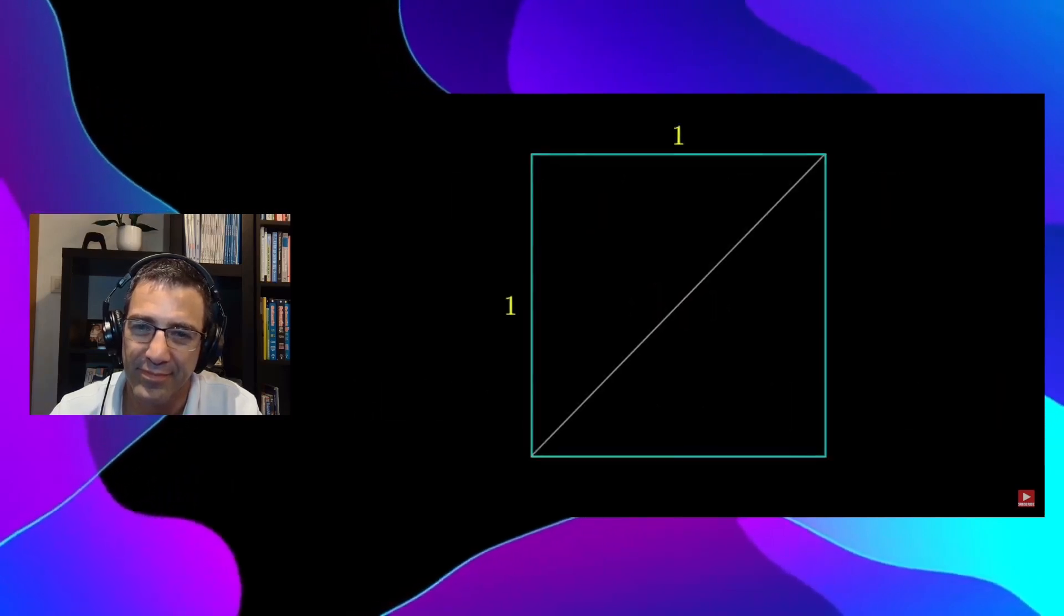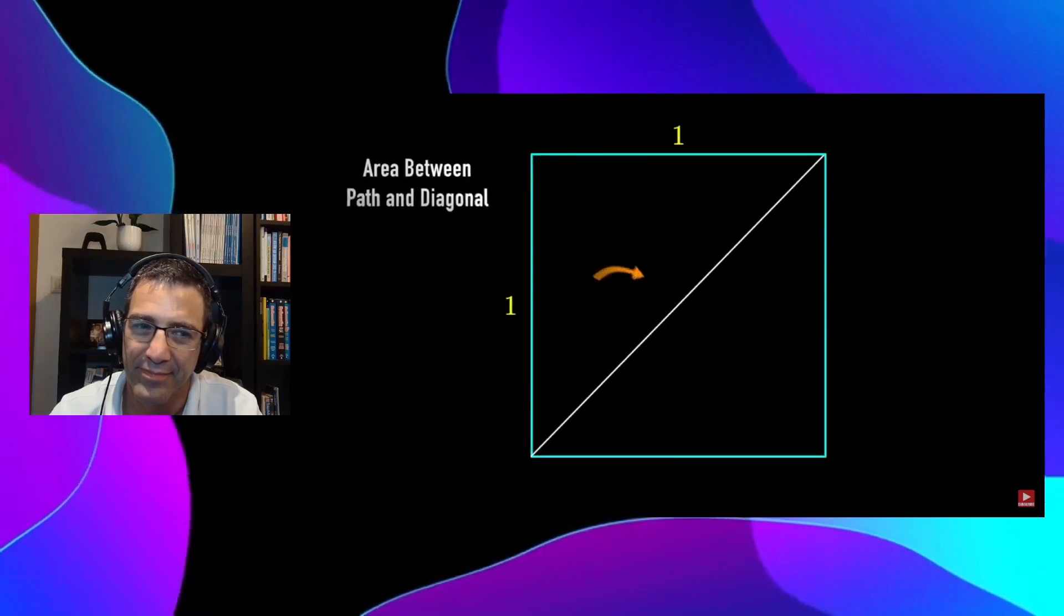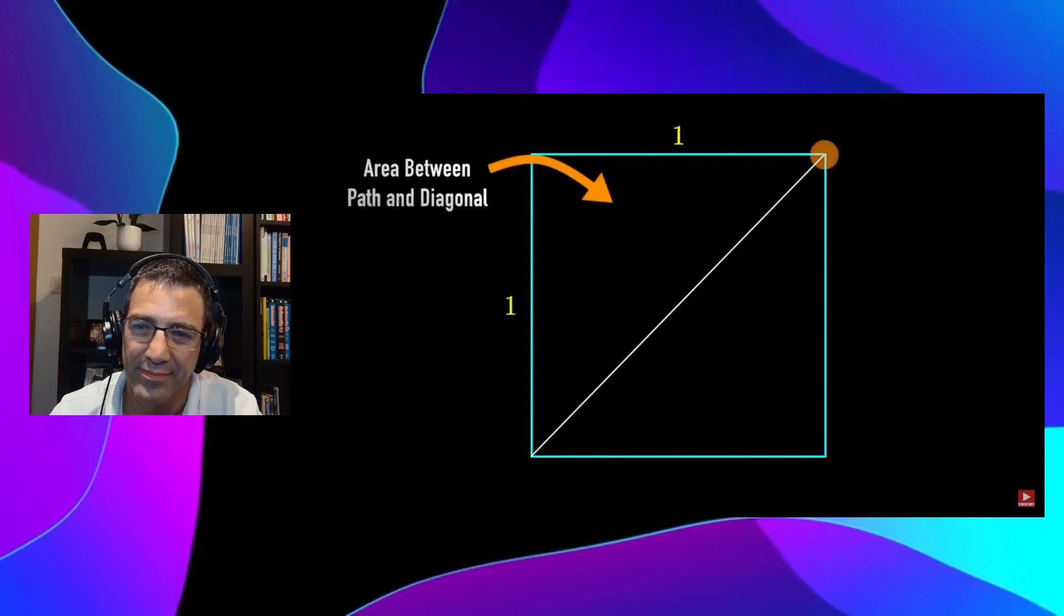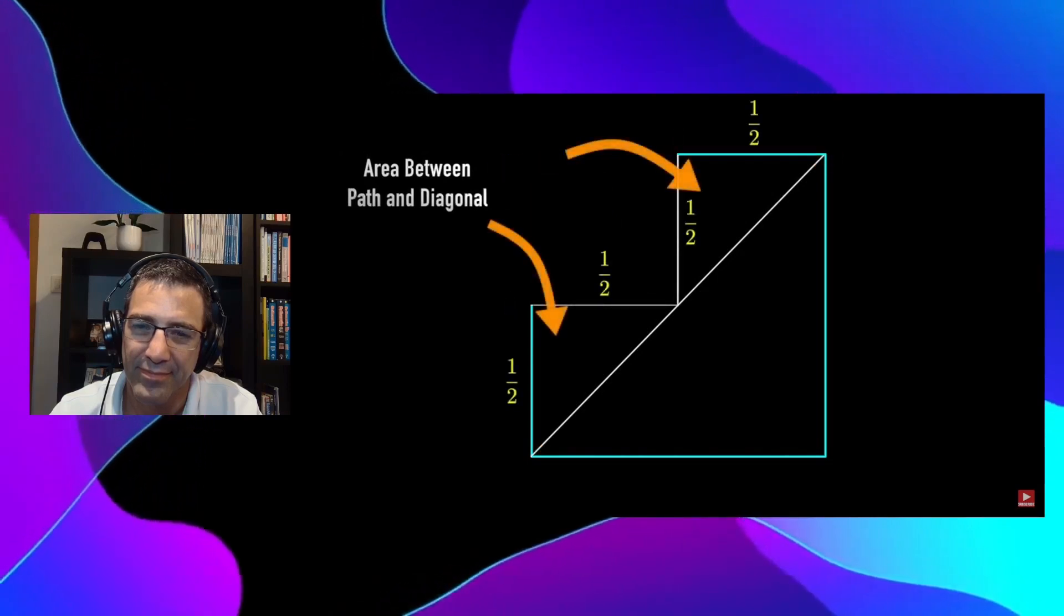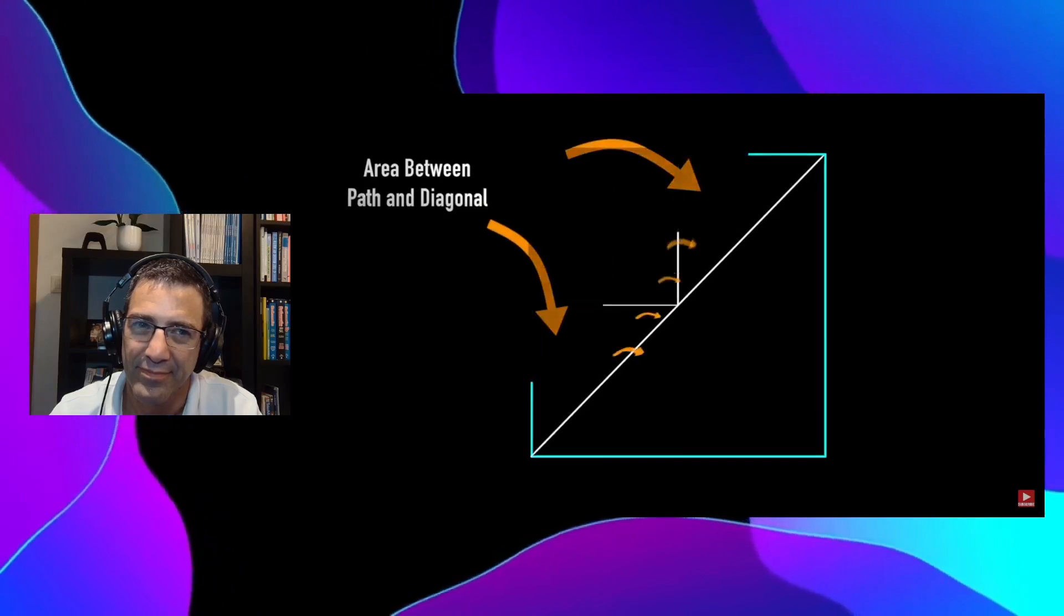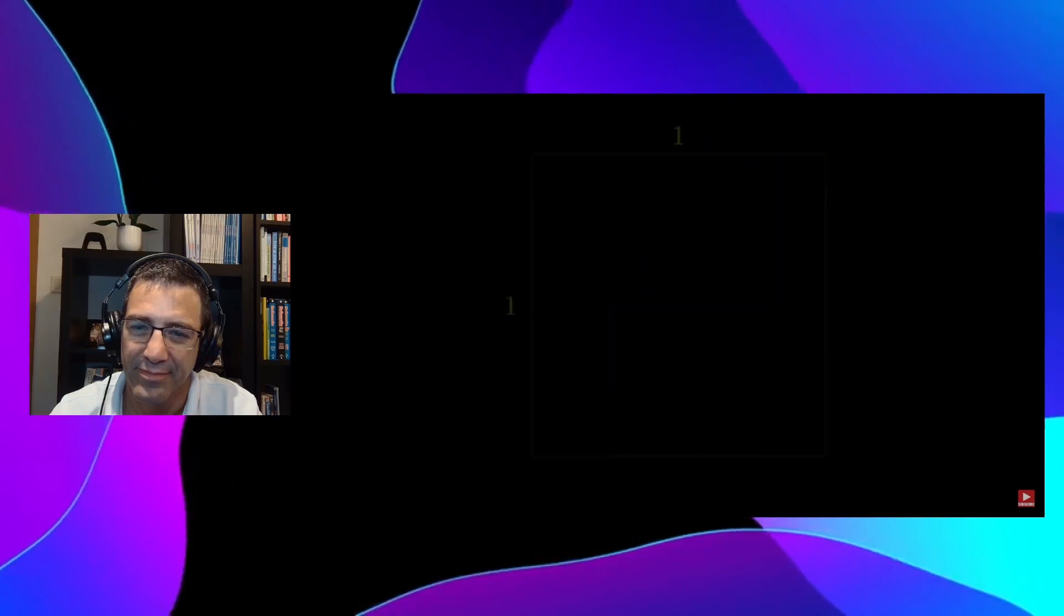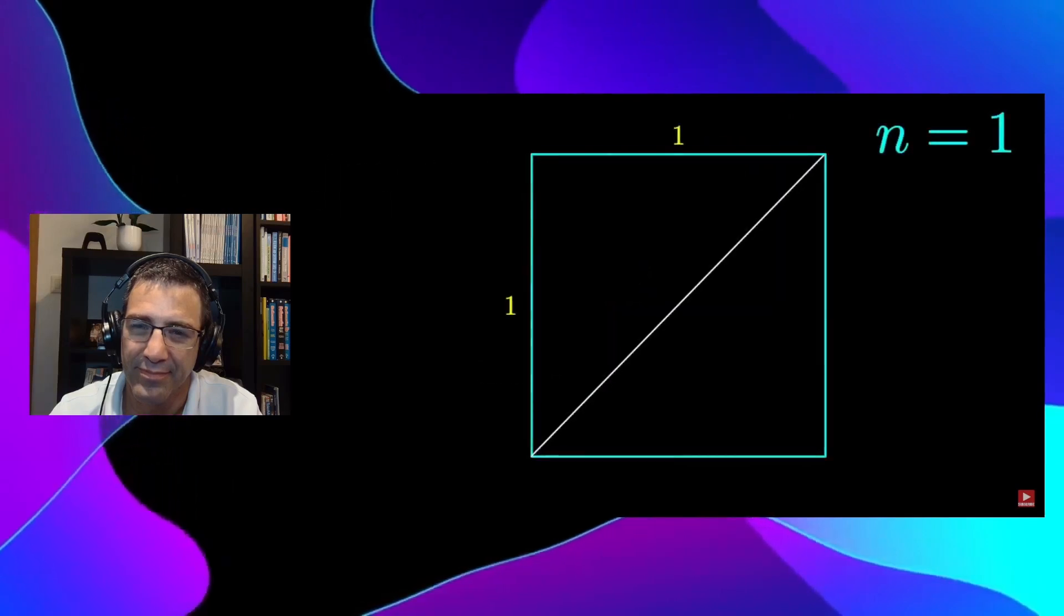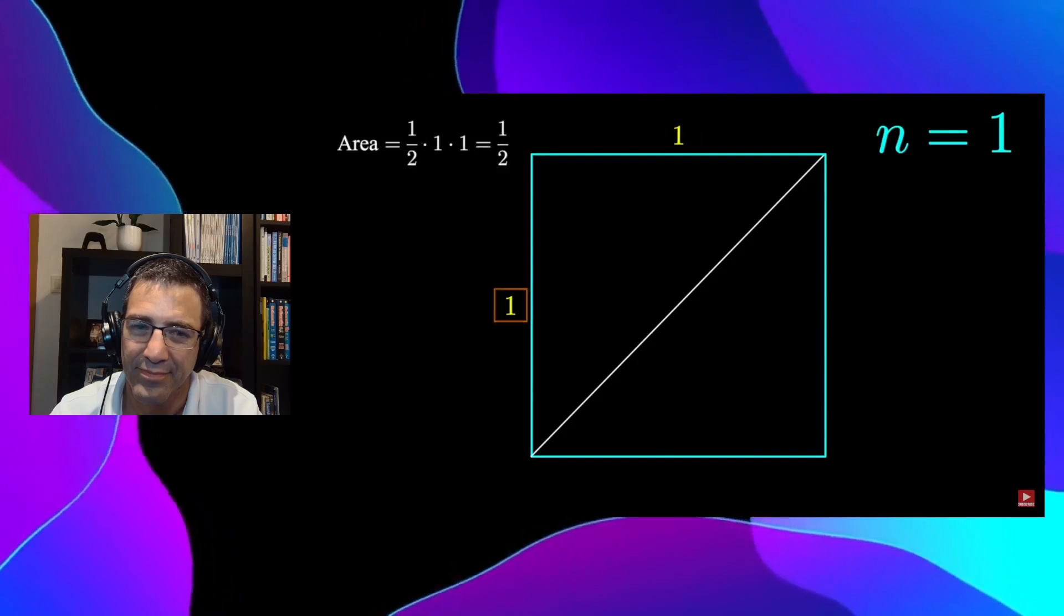We can say that the staircase path approaches the diagonal by looking at the area between them. If this area shrinks to zero, we'll say that the staircase path approaches the diagonal path. Let n be the number of iterations in this process. So when n equals 1, we have one step making a triangle with base 1 and height 1. When n equals 2, we'll have two steps with base ½ and height ½.